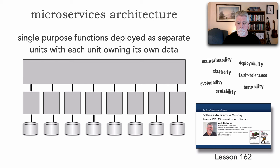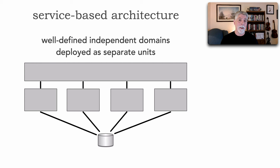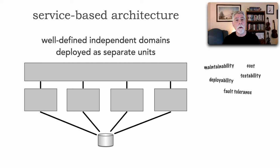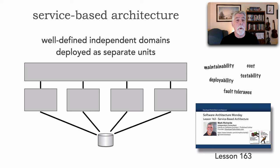Next is service-based architecture, a very popular and common style. The shape of this is well-defined independent domains deployed as separate units of software. Whereas microservices takes each function as a standalone unit, service-based takes the entire domain as an independent service. Additional aspects of this shape include great levels of maintainability, testability, deployability, low cost, and fault tolerance. Lesson 163 provides more information.